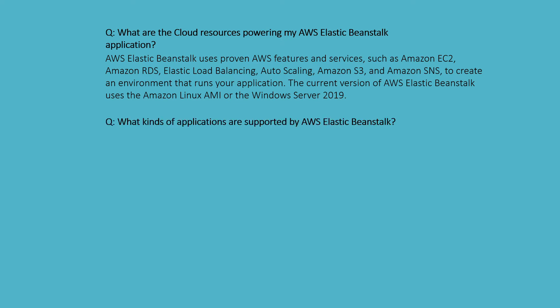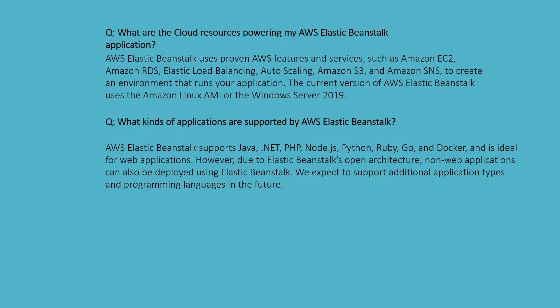What kinds of applications are supported by Elastic Beanstalk? AWS Elastic Beanstalk supports Java, .NET, Python, Ruby, Go, and Docker, and is ideal for web applications. However, due to Elastic Beanstalk's open architecture, non-web applications can also be deployed, and it is expected to support additional application types and programming languages in the future.